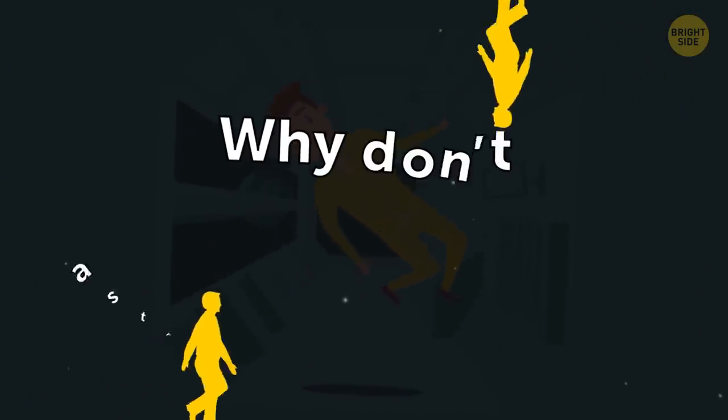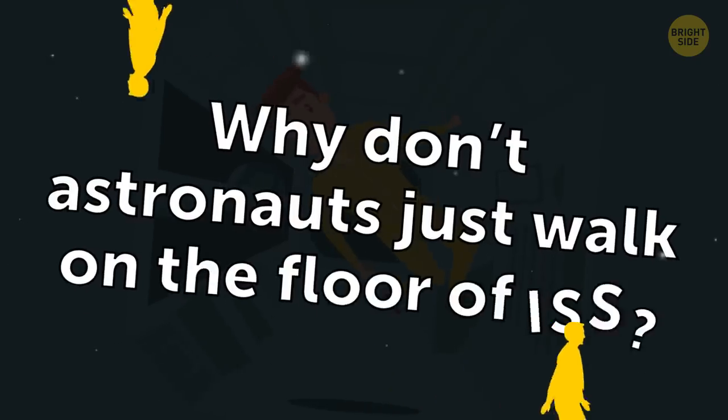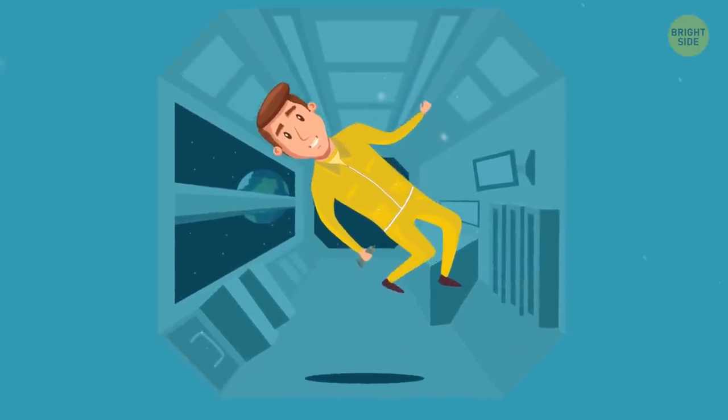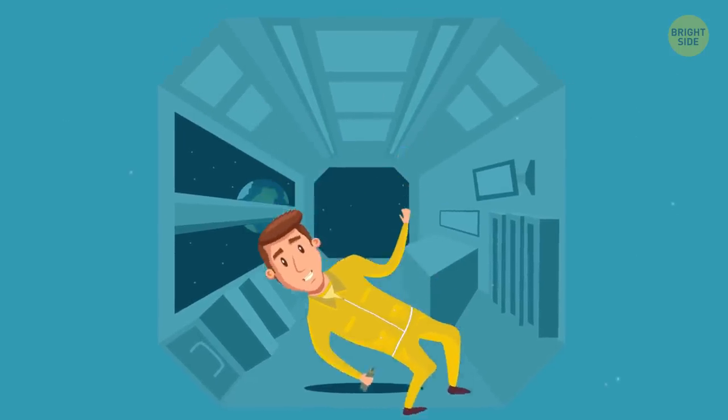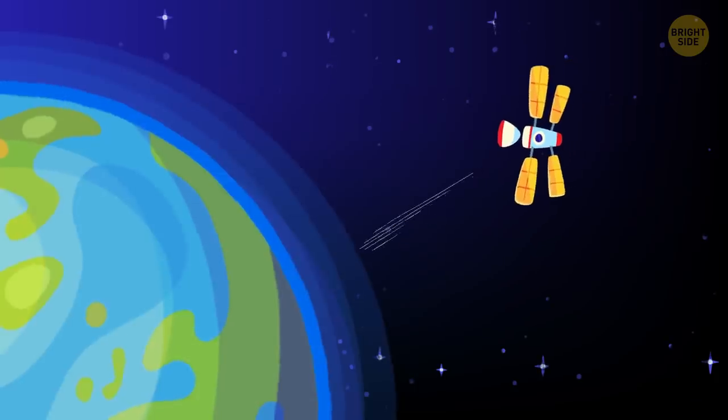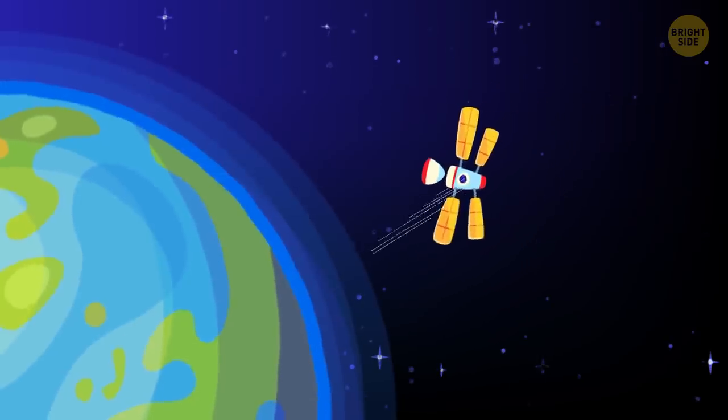But then why don't astronauts just walk on the floor of ISS as we do on Earth? Well, the reason for it is that when in orbit, they are in a state of constant freefall to Earth. And the ISS itself is also falling to Earth all the time. Sounds super crazy?